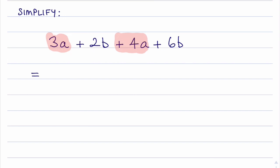When we take the three apples and somebody gives us another four apples, we have seven apples. Then looking at the 2b and the 6b, if there were bananas we'd have two bananas and another six bananas, which would be eight bananas or 8b. So these letters, these variables, can represent anything.